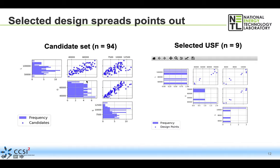Here is what the original candidate set looks like—you can see that irregular region we're covering. And here's our uniform space filling design with nine runs, showing a nice spread throughout the region. There are some holes, but that's okay because this is just phase one of a multi-phase design problem and we've only used a third of our budget. As we go into future phases we'll start to fill in those gaps, but for now this is a really great starting design.